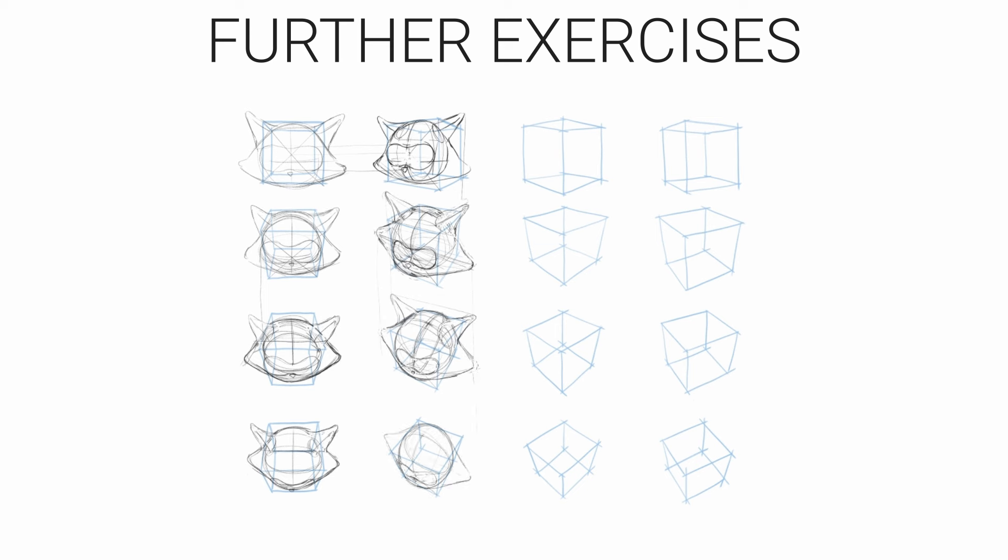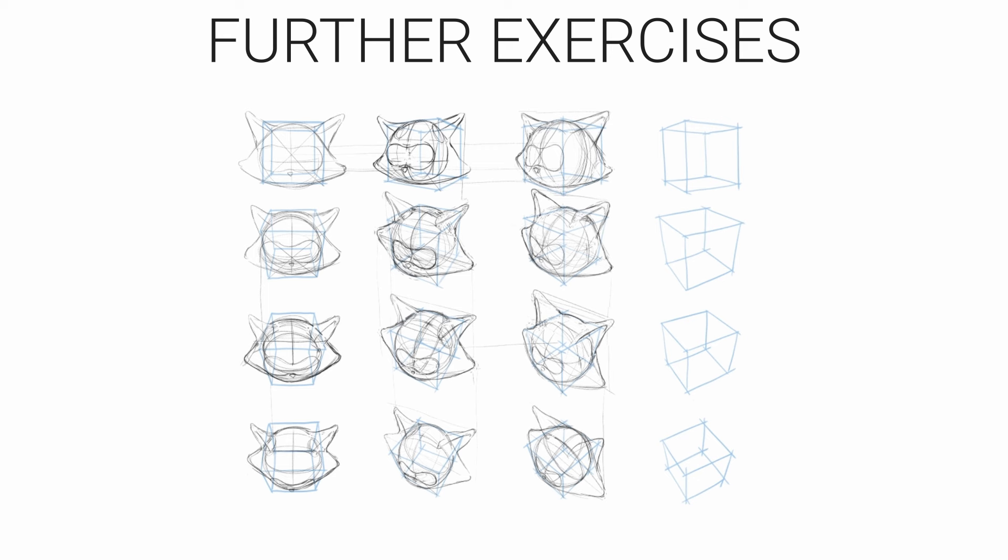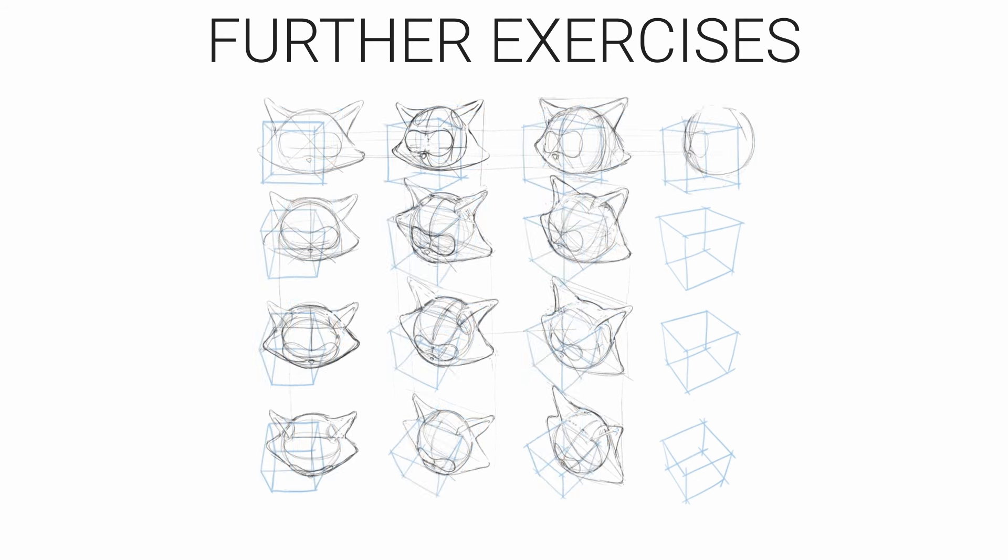Of course the more complex the object is the more difficult it will be to do this exercise. And so I recommend that you simplify objects into primitive forms as best as you can. For example, if I didn't do this with a head I probably would have done it with a foot. And if I was doing that I would just break the foot down into the simple forms first. It's a lot easier to add details once you've established the larger shape.